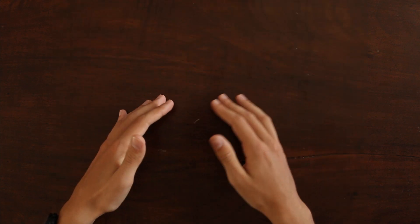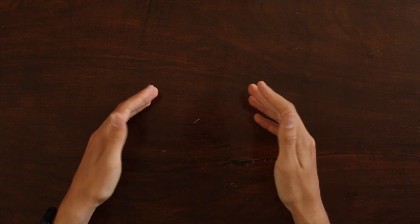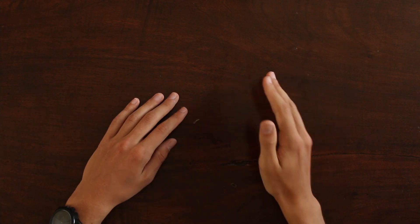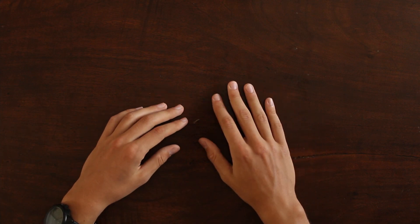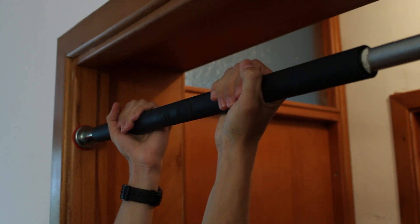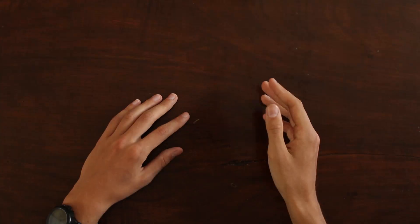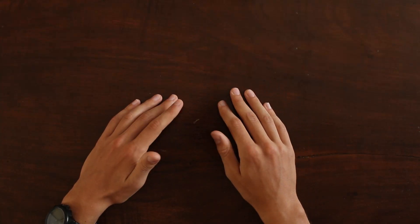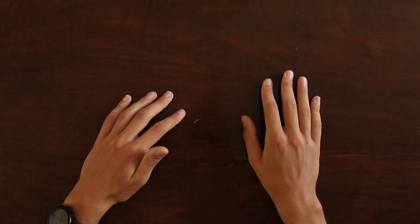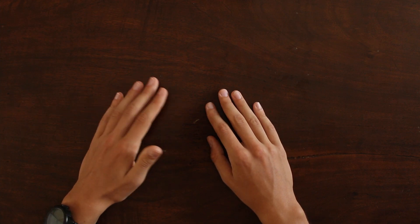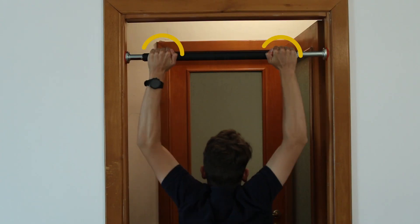Now look at your grip when holding the bar. If it's an underhand grip, you're actually doing chin-ups. They're slightly easier because they use different muscles, utilizing more of your biceps rather than your back. If you wish to do proper pull-ups, you should have an overhand grip.